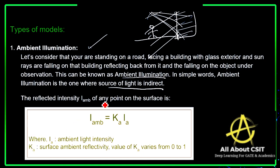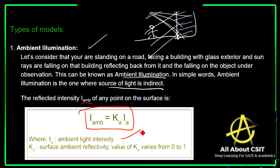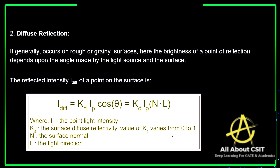The reflected intensity I_ambient of any point on the surface is calculated as: I_ambient = ka × Ia, where Ia is the ambient light intensity and ka is the surface ambient reflective coefficient. The value of ka varies from 0 to 1.